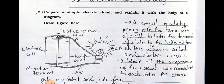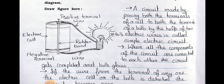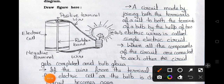First we will see the diagram. Here the electric cell is there with its positive terminal and negative terminal. It is connected with a wire; here is the rubber band and wire connected with the bulb. The bulb glows in this circuit.